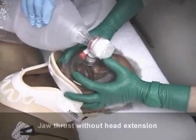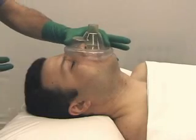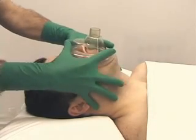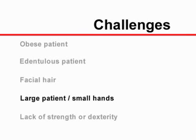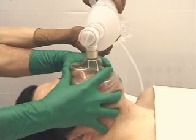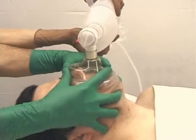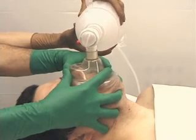In this situation, the jaw thrust maneuver alone without head extension is recommended. It may be difficult or impossible to maintain an adequate seal using only one hand. This challenge can occur in obese or edentulous patients or in those with abundant facial hair. Additionally, large patients may present a challenge for individuals with small hands or with insufficient manual strength or dexterity. In these situations, the mask can be held with two hands, with each hand positioned as described in the one hand technique. A second person compresses the bag valve device.